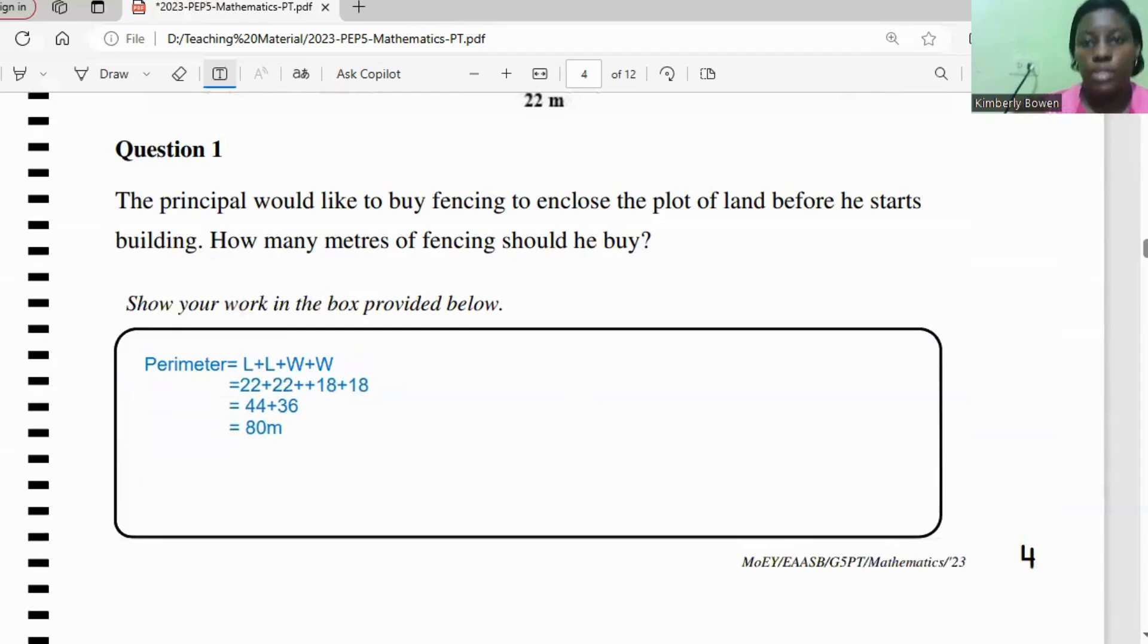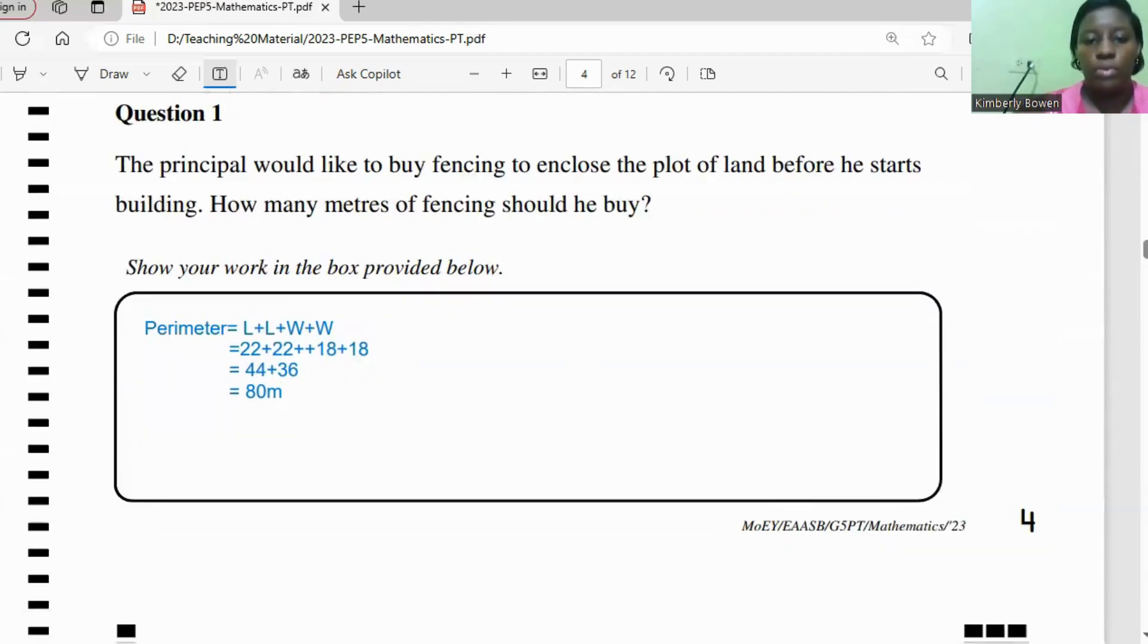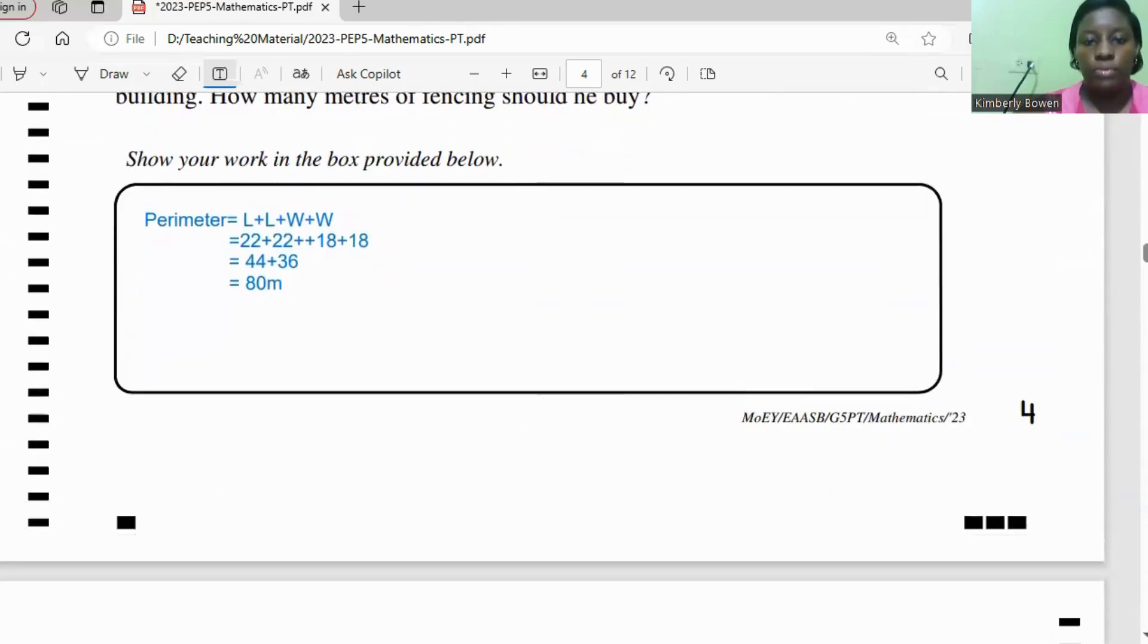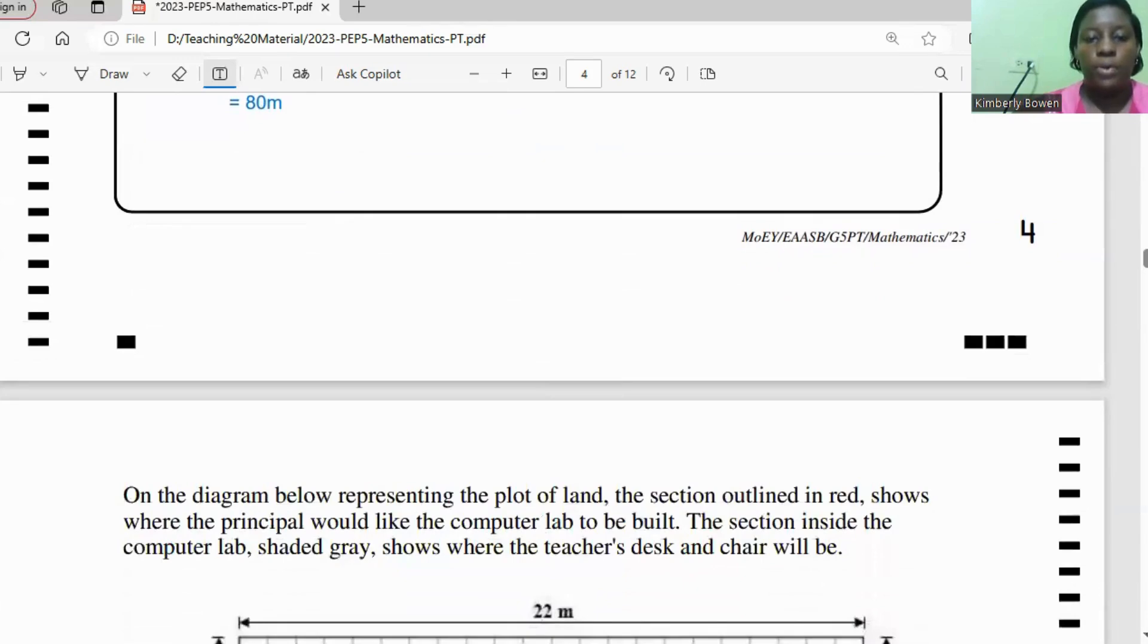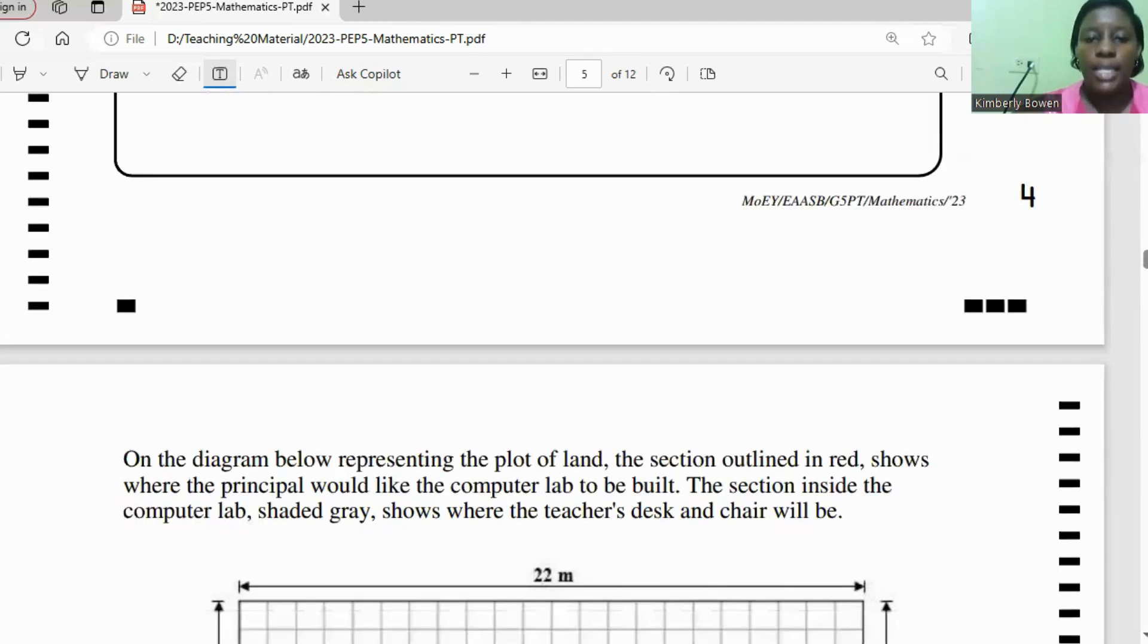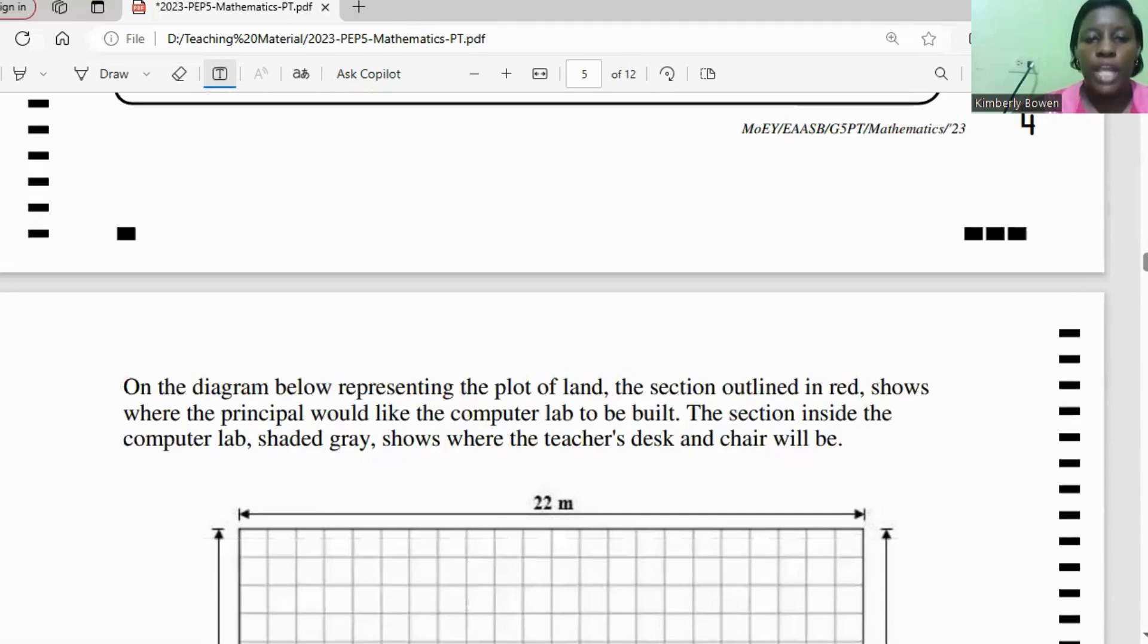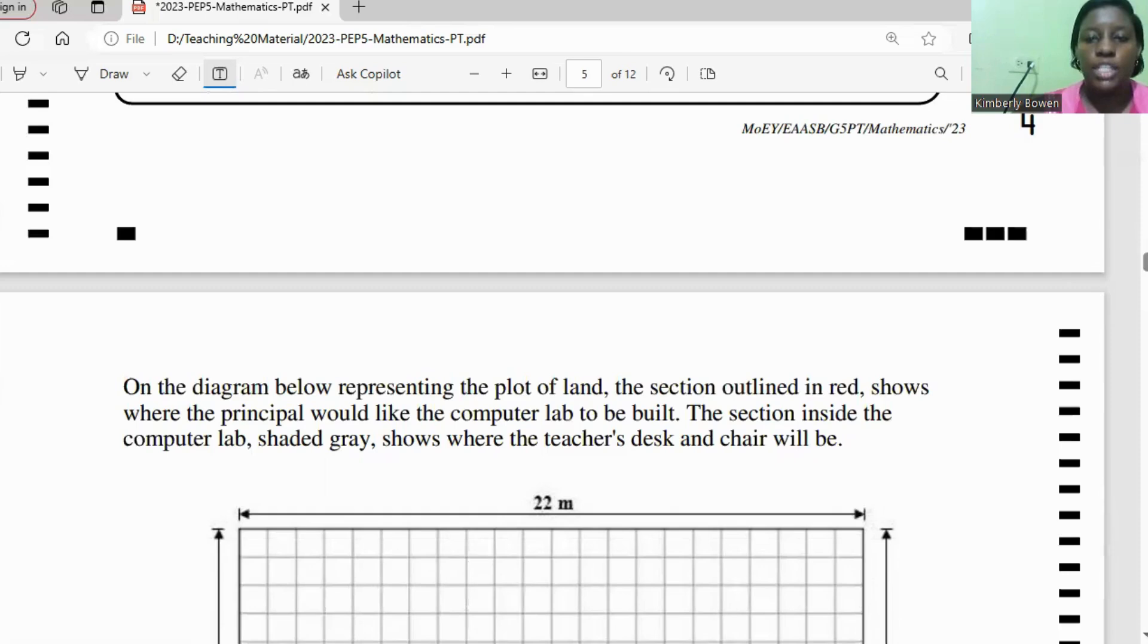Let's go on to number two. On the diagram below representing the plot of land, the section outlined in red shows where the principal would like the computer lab to be built. The section inside the computer lab shaded gray shows where the teacher's desk and chair will be.